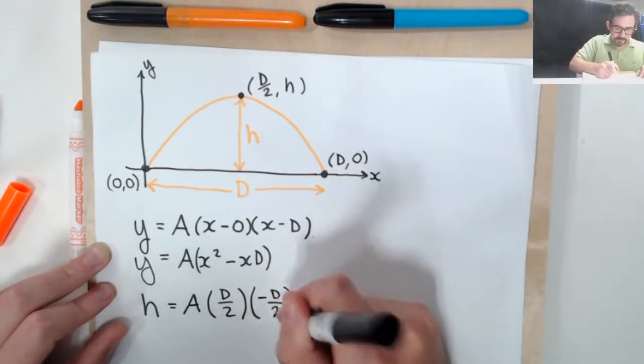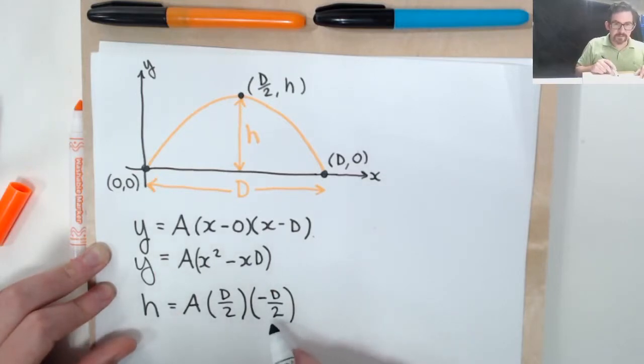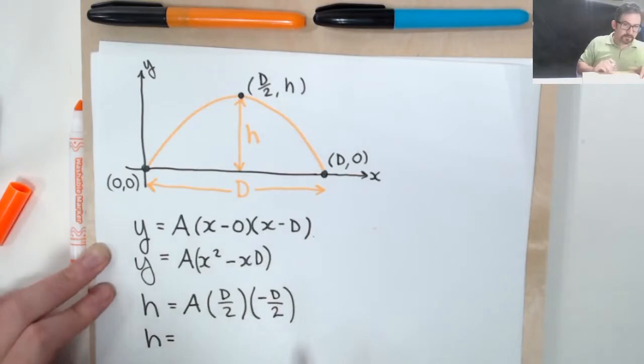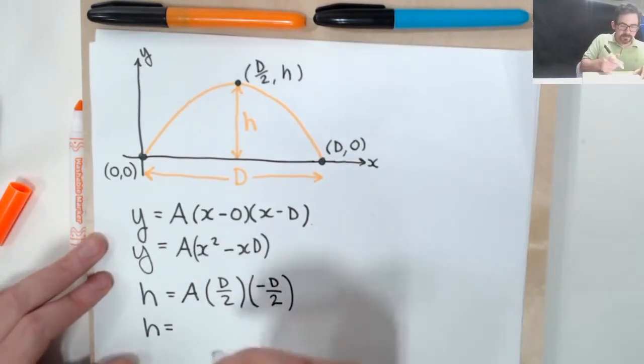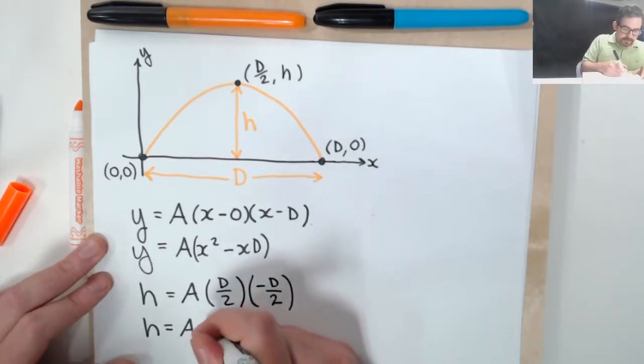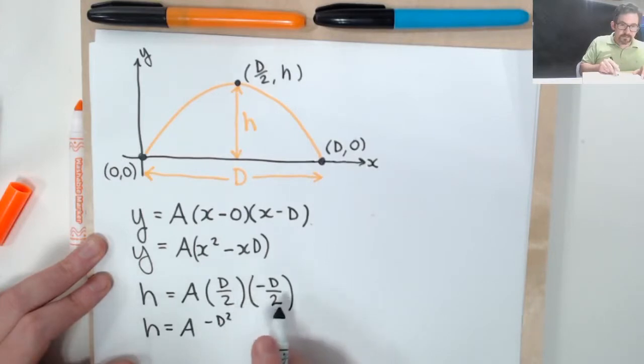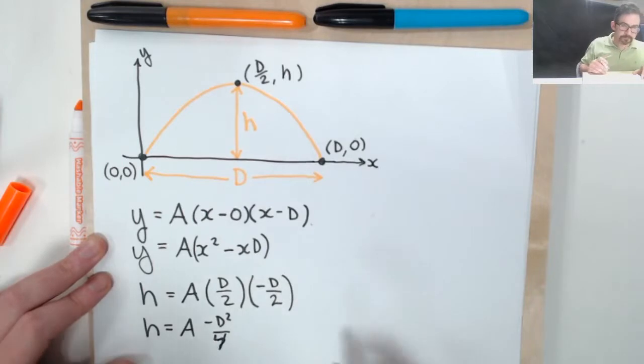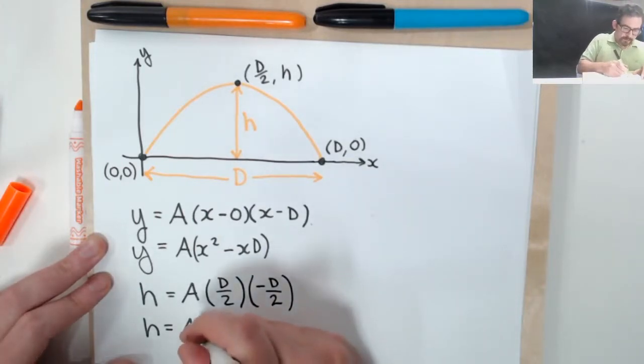I know if I take some number and subtract twice that number from itself, I'm going to get minus the number. So that's what we're doing here. So I see that h, the relationship I'm talking about is that h is equal to a times d times d times minus one, that's going to be a minus d squared. And in my denominator, I have a two times two, so over four. So h is going to be a times negative d squared over four.